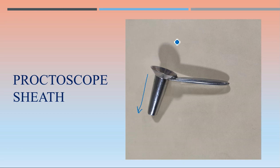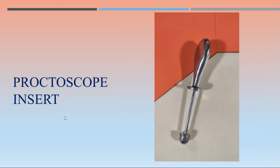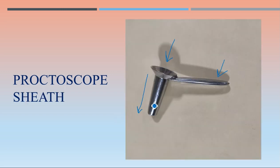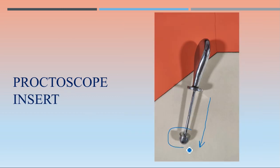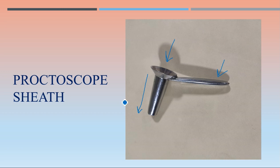Through this portion we shine a light and visualize structures. This is the handle used to hold the instrument. During insertion, to avoid anal trauma, we use the proctoscope insert — it goes inside the sheath and is atraumatic, avoiding damage to the anal mucosa. This is the handle of the proctoscope insert, and these two instruments are routinely used together.